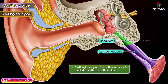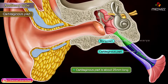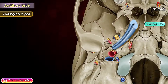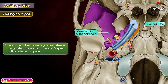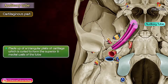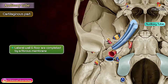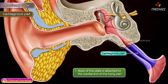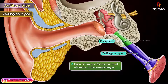The cartilaginous part forms the anterior and medial two-thirds of the tube. It is 25 mm long and lies in the sulcus tubae, a groove between the greater wing of the sphenoid and the apex of the petrous temporal. It is made up of a triangular plate of cartilage which is curled to form the superior and medial walls of the tube. The lateral wall and floor are completed by a fibrous membrane. The apex of the plate is attached to the medial end of the bony part, and the base is free and forms the tubal elevation in the nasopharynx.